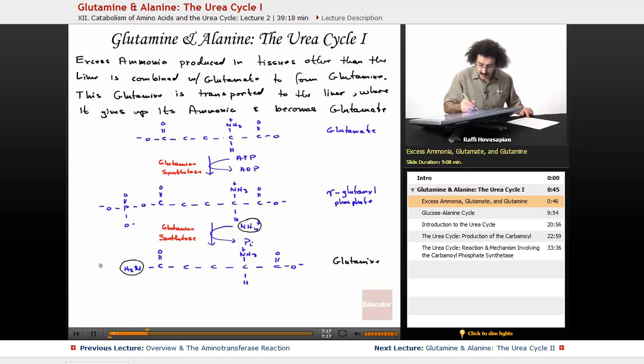When glutamine enters the liver and releases that ammonia that it brought from other parts of the body for processing, it releases this particular one on the end, not this one. It's true that glutamate itself is the central molecule. Glutamate in the liver releases this one, but glutamine when it comes in releases this one. So there are two that glutamine has. The first one is released that way, and then glutamate releases that one.